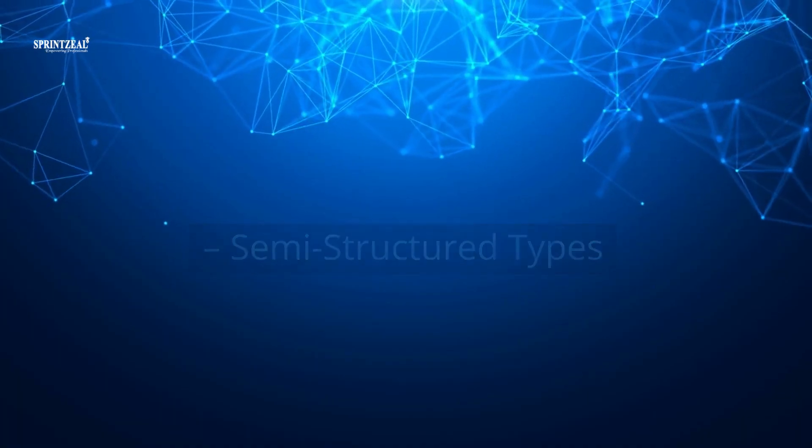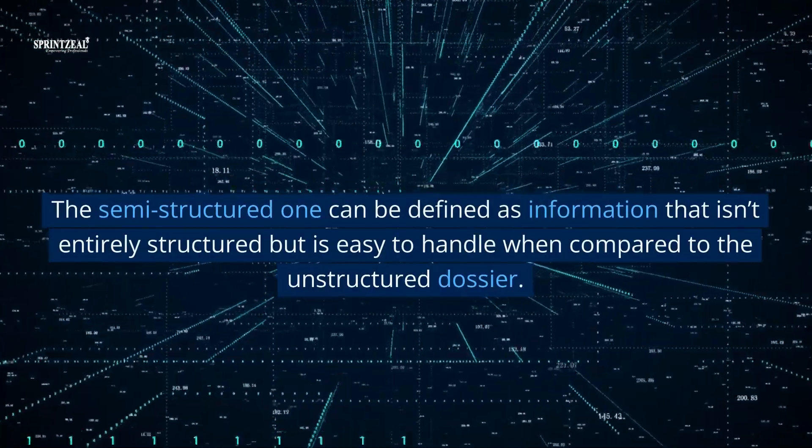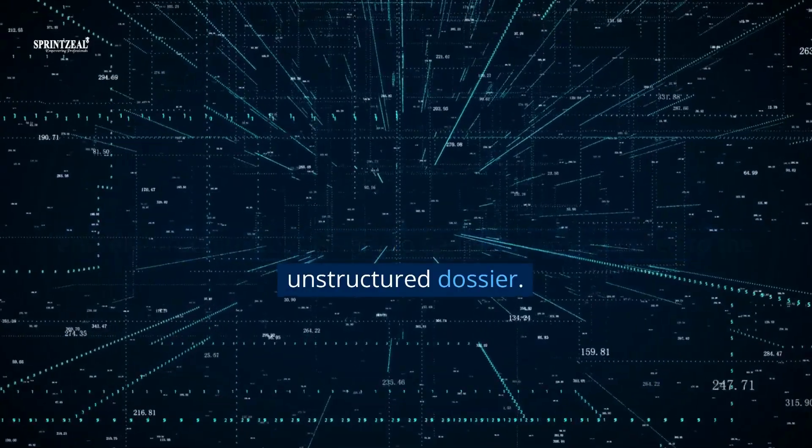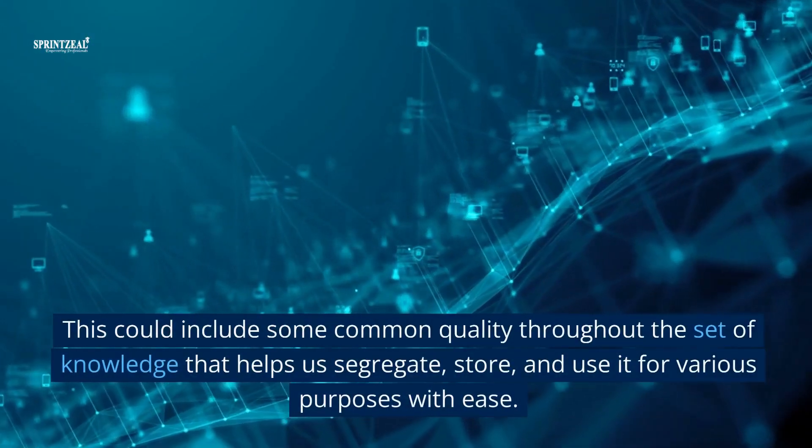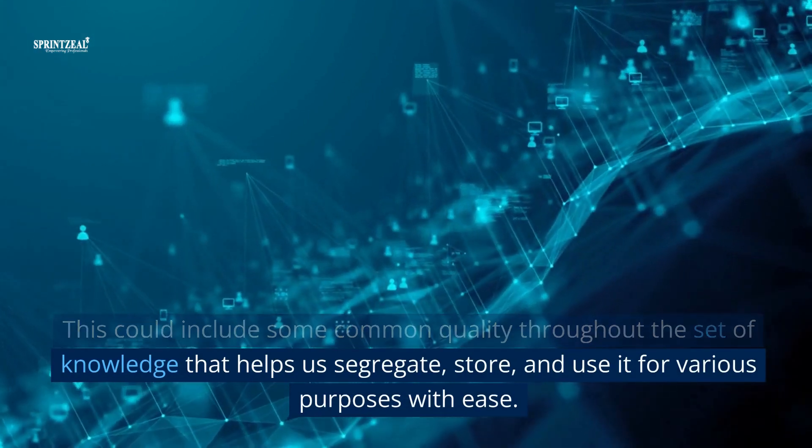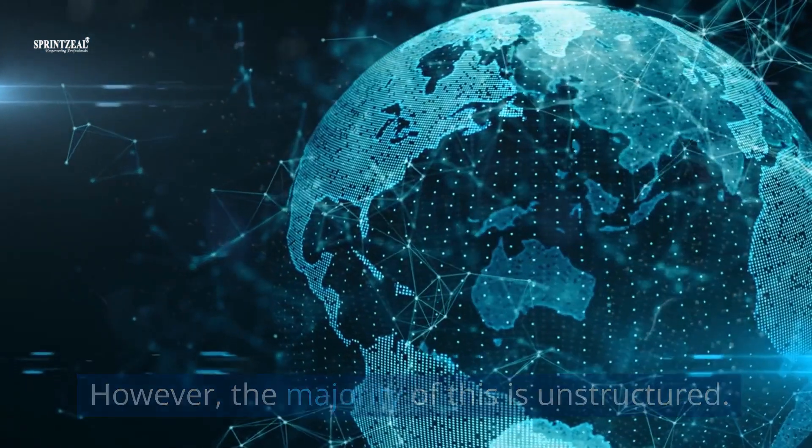Semi-structured types: The semi-structured type can be defined as information that isn't entirely structured but is easy to handle compared to unstructured data. This could include some common quality throughout the set of knowledge that helps us segregate, store, and use it for various purposes with ease. However, the majority of this is unstructured.